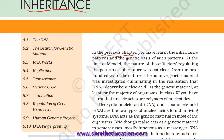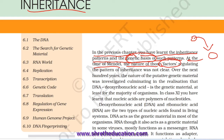In the previous chapter, you have learnt the inheritance pattern and the genetic basis of such pattern. At the time of Mendel, the nature of those factors was unknown. Over the next 100 years, the nature of the putative genetic material was investigated — this is the chemical nature of the genetic material.